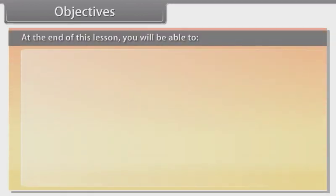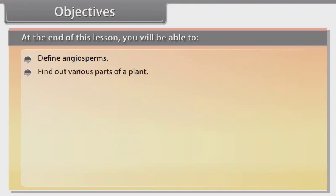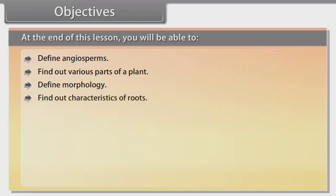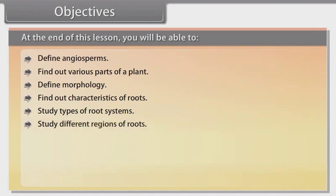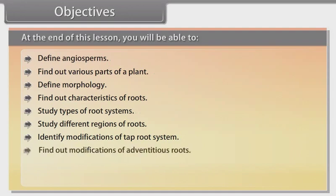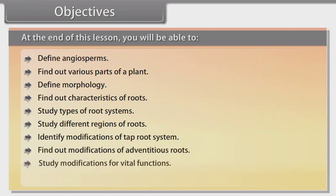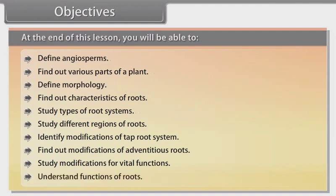At the end of this lesson you will be able to: define angiosperms, find out various parts of a plant, define morphology, find out characteristics of roots, study types of root systems, study different regions of roots, identify modifications of tap root system, find out modifications of adventitious roots, study modifications for vital functions, and understand functions of roots.